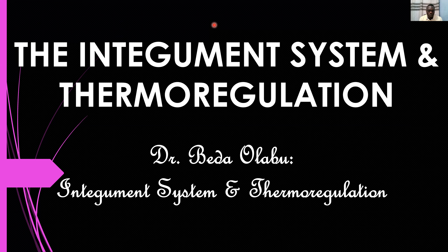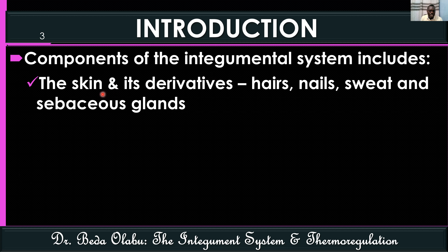Welcome to this virtual lecture on the integument system and mechanisms of thermoregulation. When we talk about the integument system, we are referring to a number of things — primarily the skin and its derivatives. Derivatives of the skin refer to those things attached to the skin, including hair, nails, sweat glands, and sebaceous glands.